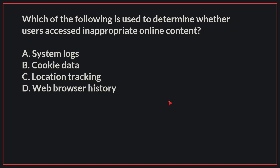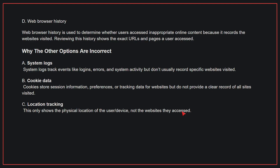Which of the following is used to determine whether users accessed inappropriate online content? The correct answer is D, web browser history. Web browser history is used to determine whether users accessed inappropriate online content because it records the websites visited. Reviewing this history shows the exact URLs and pages a user accessed.